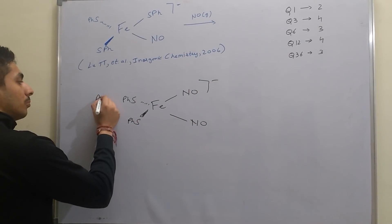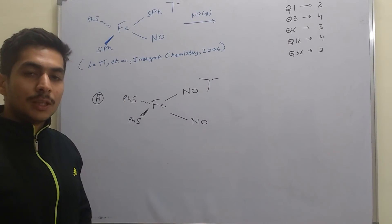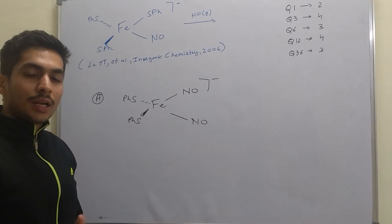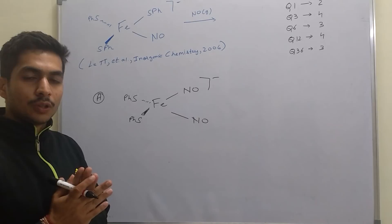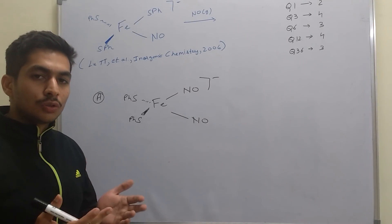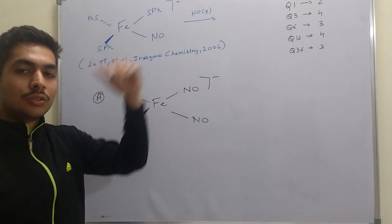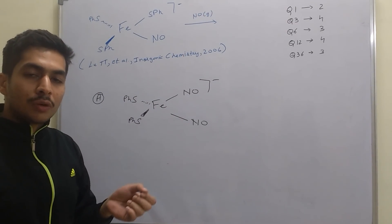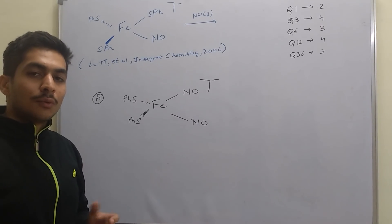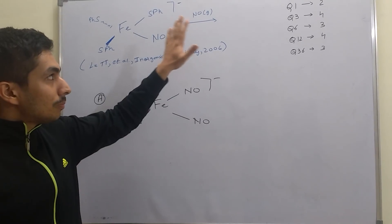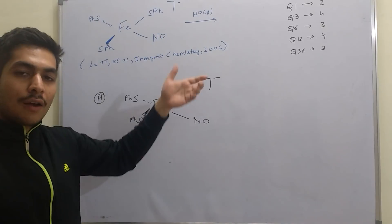This is option number A. Since there is only one equivalent of NO, in the rest of the options you will see that more than one NO has been attached to the iron complex. Even if you go by intuition: if it is not mentioned how many equivalents, and if excess or two or three equivalents is not specified, then you have to assume it to be one.